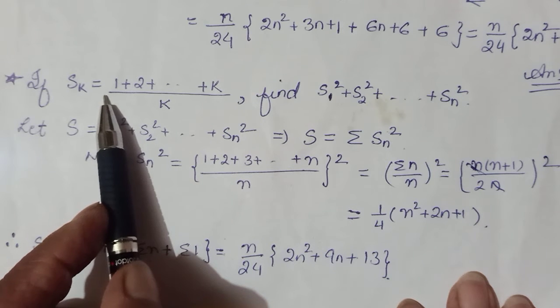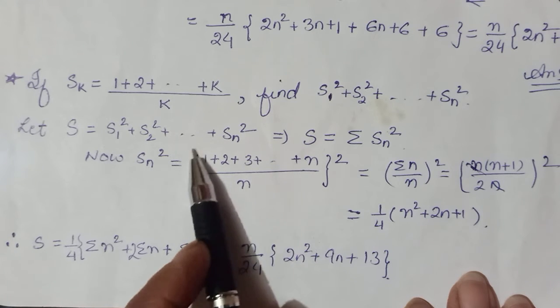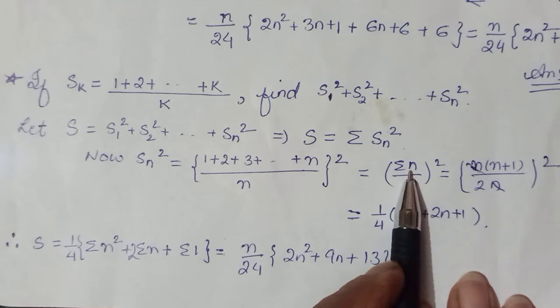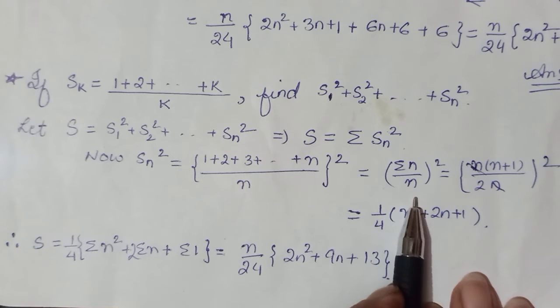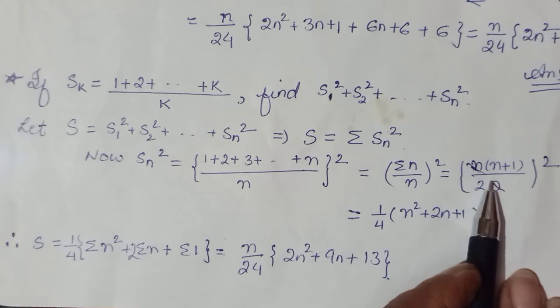As per the definition of Sk, replacing k by n. Phir iska apne square karna hai. Toh pehle Sn ko hi hum simplify karte hain. As we can see, the numerator is actually Σn: 1 + 2 + 3 till n. So Σn upon n. And Σn's formula is n(n+1)/2. So n and n cancel ho ja raha, you are only left with (n+1)/2.